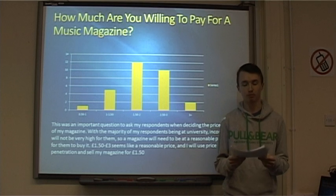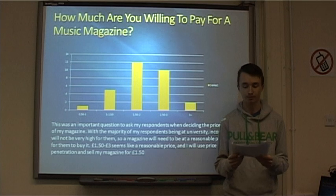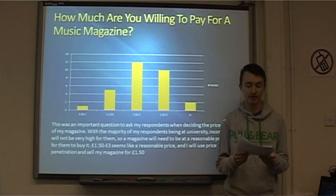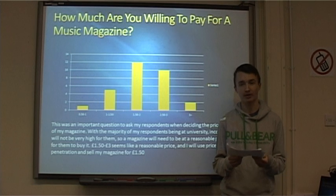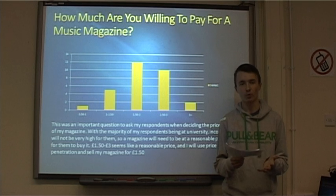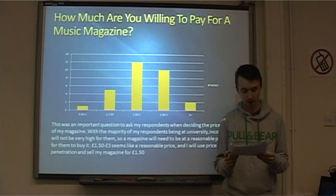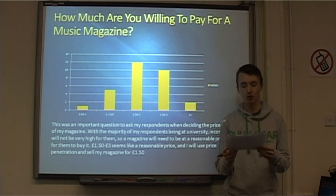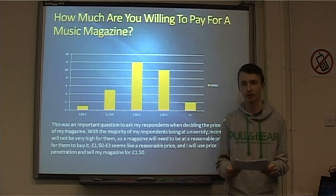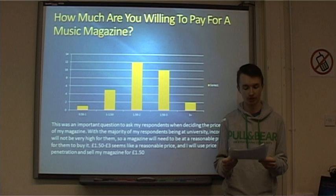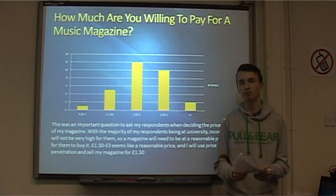The pricing on my magazine was a very important factor. As we saw in the previous slide, 53% of my respondents were currently at university. Therefore, they may be a bit tight on their money due to student loans. Twenty-two of my respondents said they would pay between £1.50 and £3 for my magazine, but I have chosen to use price penetration and sell my magazine at £1.50 in order to create a fan base, as they would like the price and maybe buy the magazine because of it.